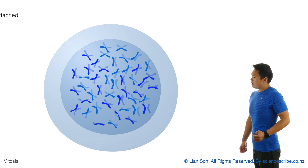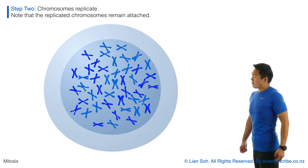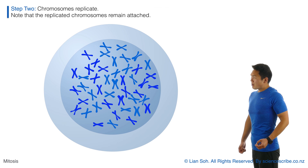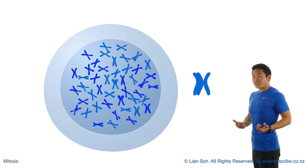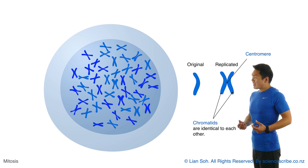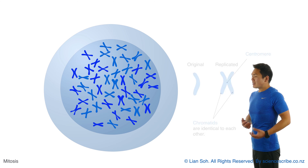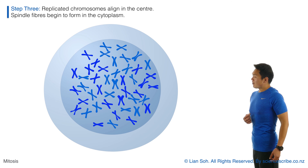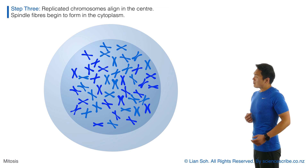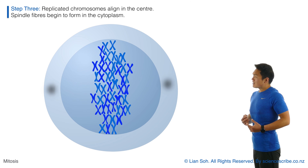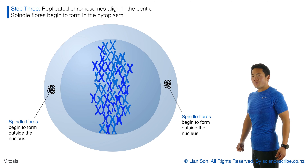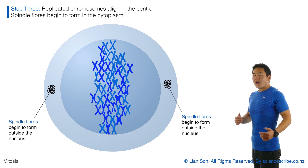Once those chromosomes shorten and fatten, they go ahead and replicate. Here's a diagram of what that replicated chromosome looks like — notice that one half, called a chromatid, is identical to the other half. Once all chromosomes have replicated, they then begin to align themselves in the center of the cell.